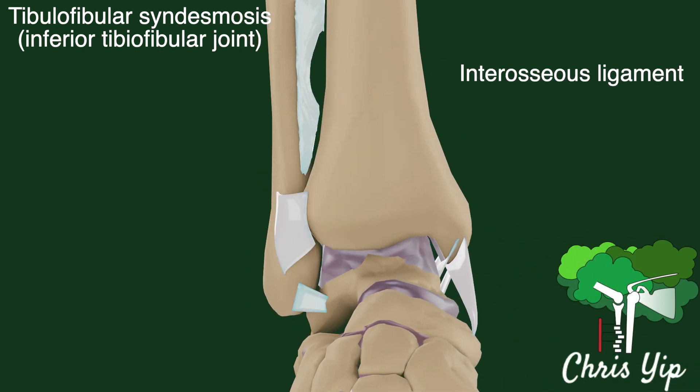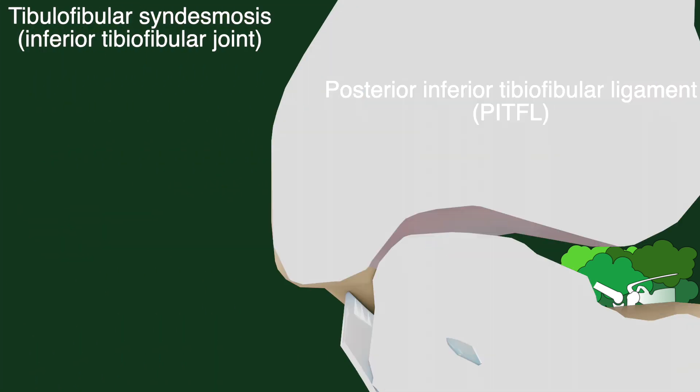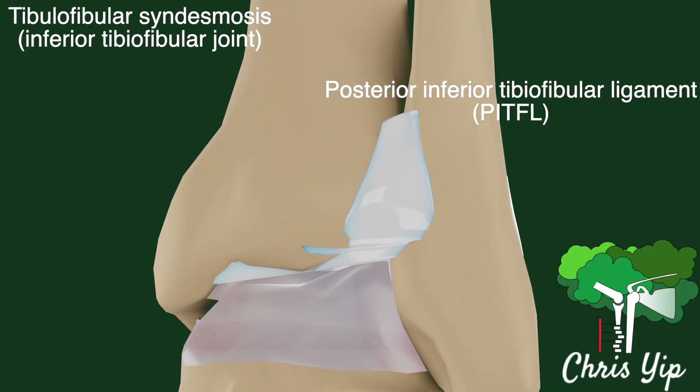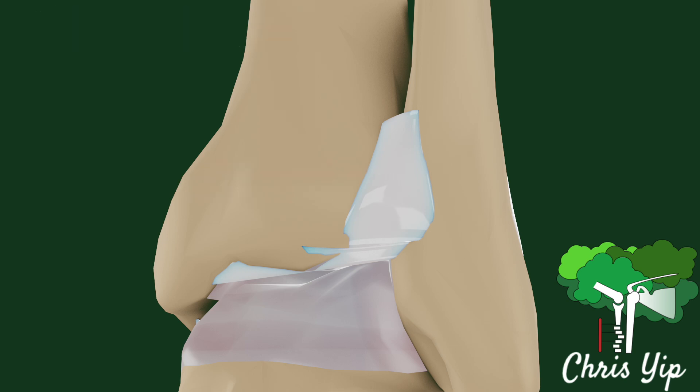The joint is supported by the interosseous ligament, the anterior inferior tibial fibular ligament, and the posterior inferior tibial fibular ligament. There is also the transverse tibial fibular ligament, also referred to as the intermalleolar ligament. There is also a part of the distal tibia that protrudes posteriorly, commonly referred to as the posterior malleolus.